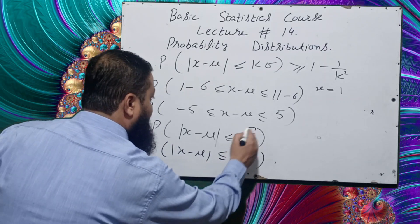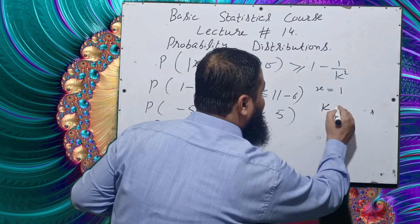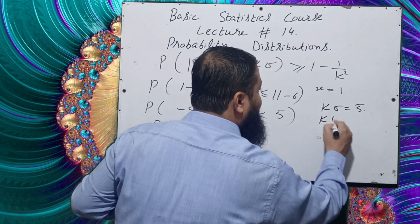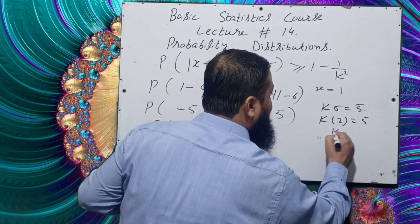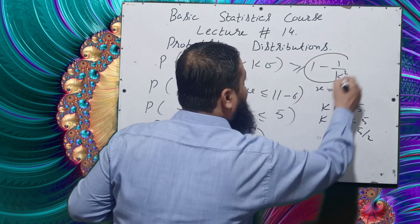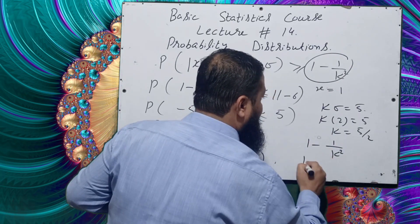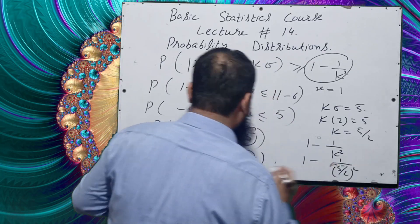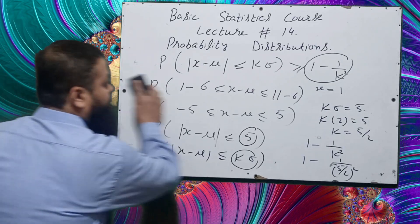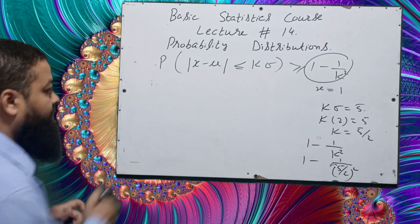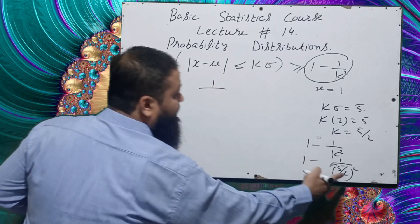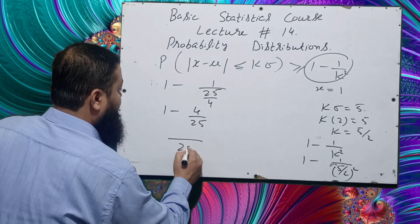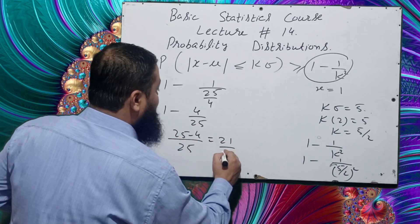Comparing with Chebyshev's form P(|X − μ| ≤ kσ), we have kσ = 5. Since σ = 2, we get k × 2 = 5, so k = 5/2. Now substituting into 1 − 1/k²: we get 1 minus 1 over (5/2)² = 1 minus 1 over (25/4) = 1 minus 4/25. Taking LCM: (25 − 4)/25 = 21/25.